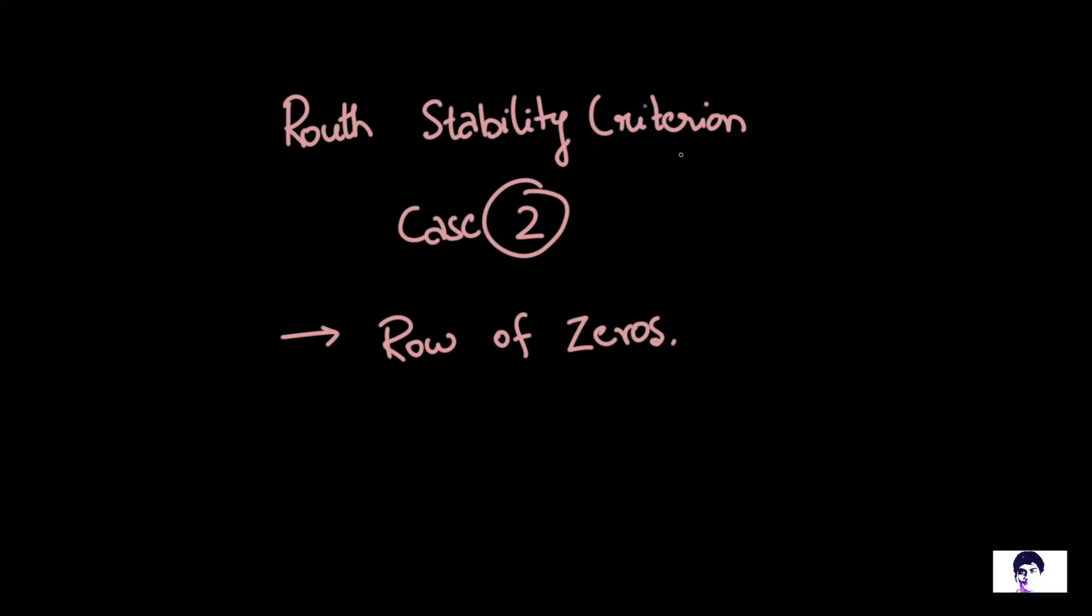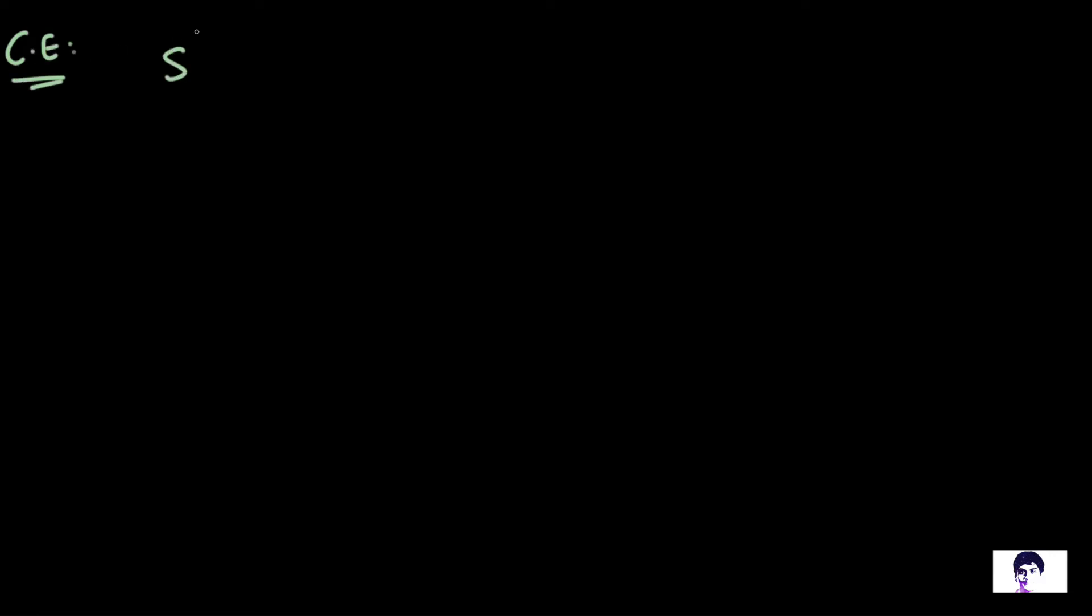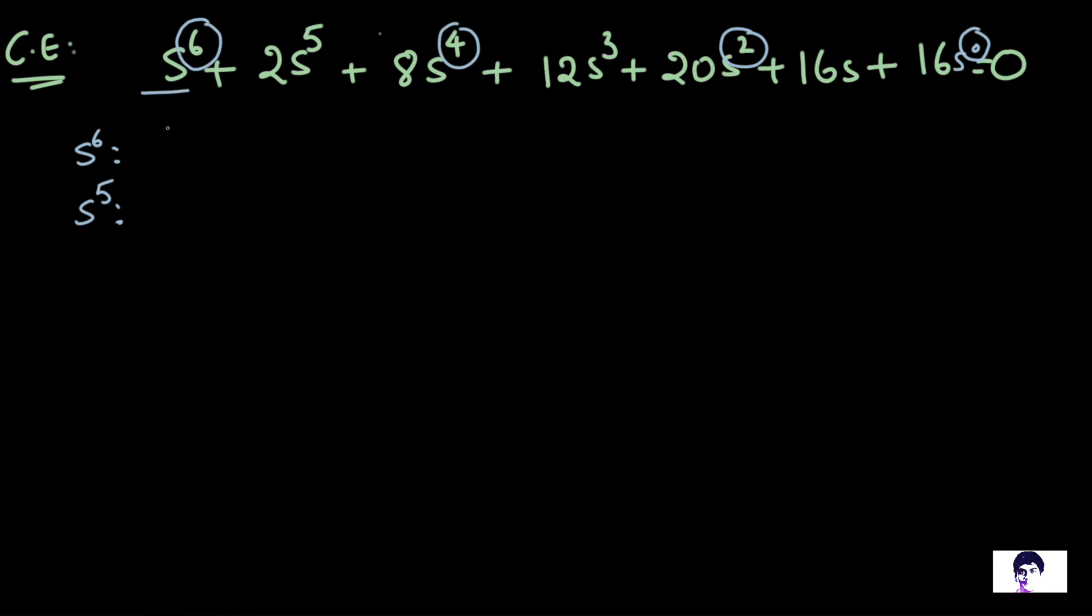Now let us solve a Routh array in which an entire row of elements is zero. So let me take a characteristic equation of S^6 + 2S^5 + 8S^4 + 12S^3 + 20S^2 + 16S + 16 = 0. Now we all know how a Routh array is formed. The first row, since S^6 is the highest degree, we are going to form it with the coefficients of all the even powers of S. So the first row S^6 would be 1, 8, 20, and 16. And for the second row, I would write down the coefficients of all the odd powers of the equation: 2, 12, and 16, which are the coefficients of S^5, S^3, and S^1.